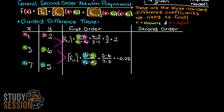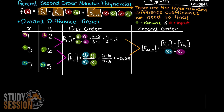Now we are ready to move on to our second order column. This second order divided difference will be f0,1,2. To find this divided difference, we are essentially taking a difference of our first order divided difference over the total x range. You can follow our arrows backwards and see that we arrive at x0 and x2. Therefore, after completing the math here, we have minus 0.375.